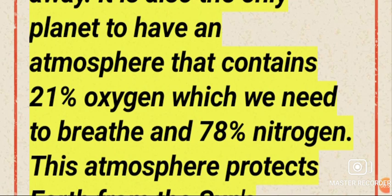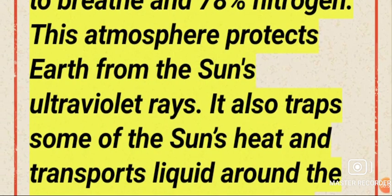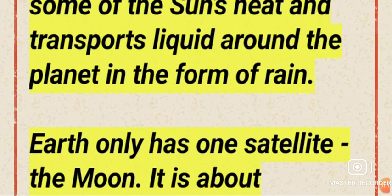This atmosphere protects Earth from the Sun's ultraviolet rays. It also traps some of the Sun's heat and transports water around the planet in the form of rain.